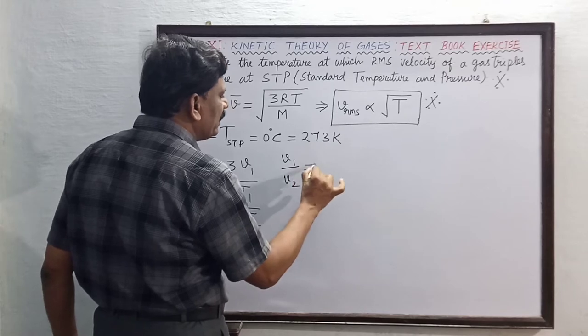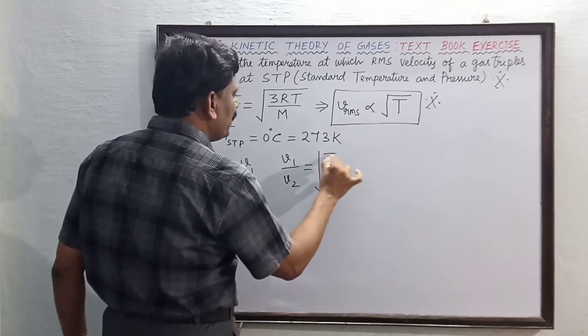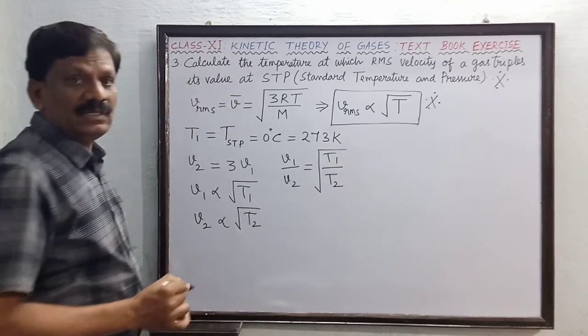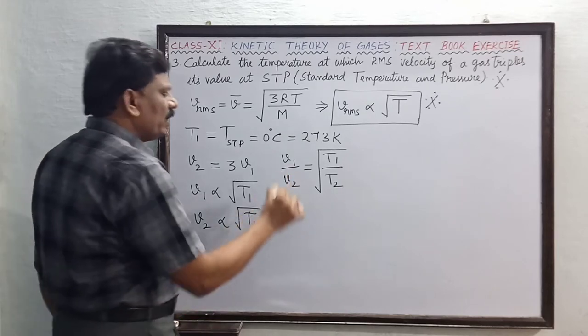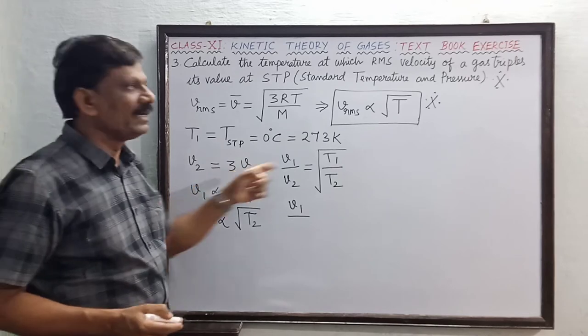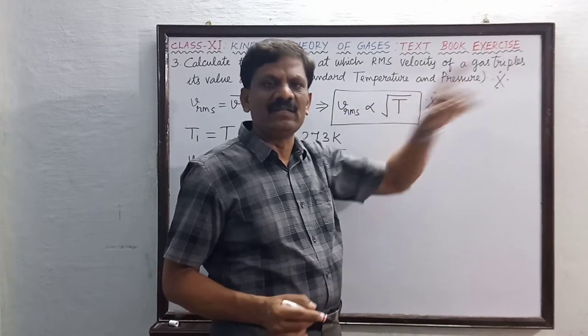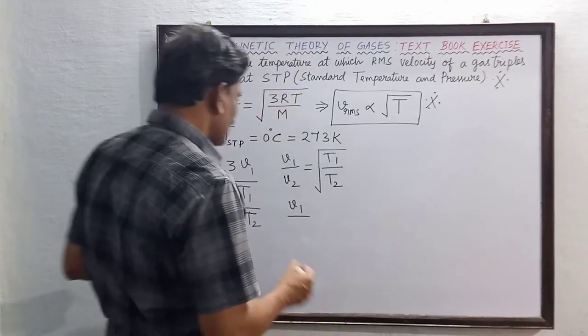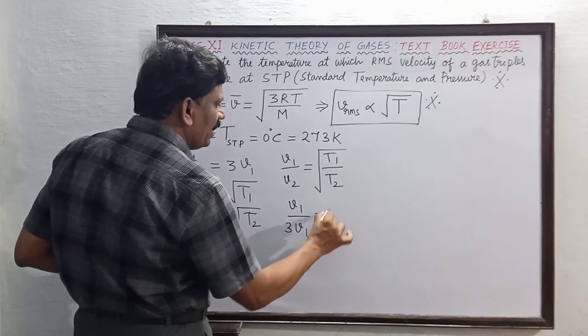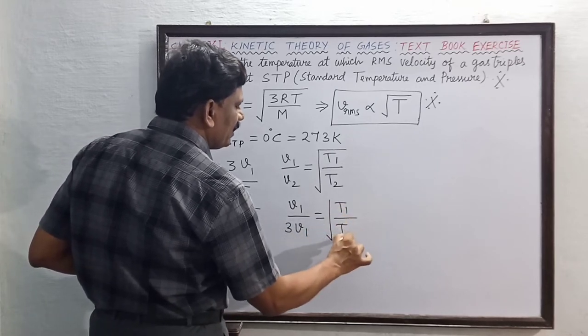v1 divided by v2 is equal to square root of T1 by T2. Instead of v2, substitute the velocity which becomes three times. This equals square root of T1 divided by T2.